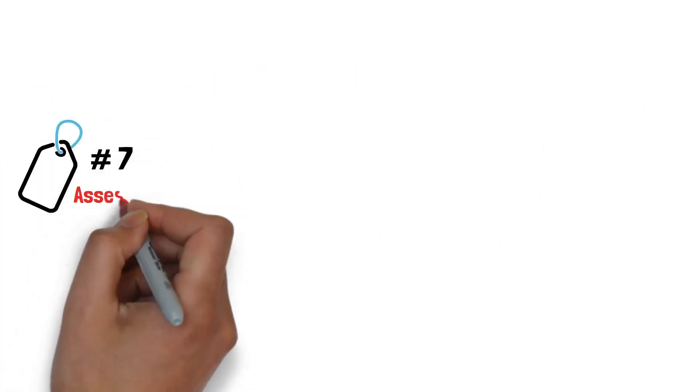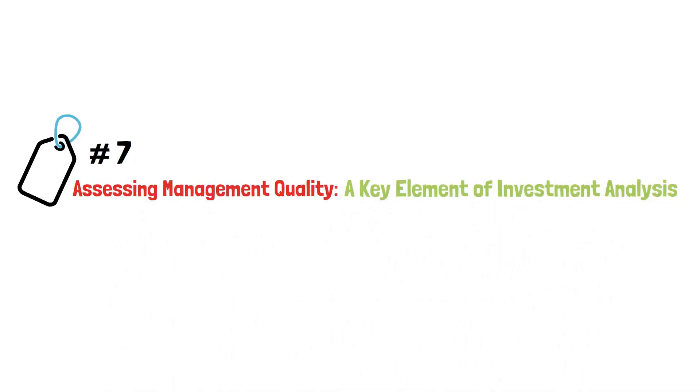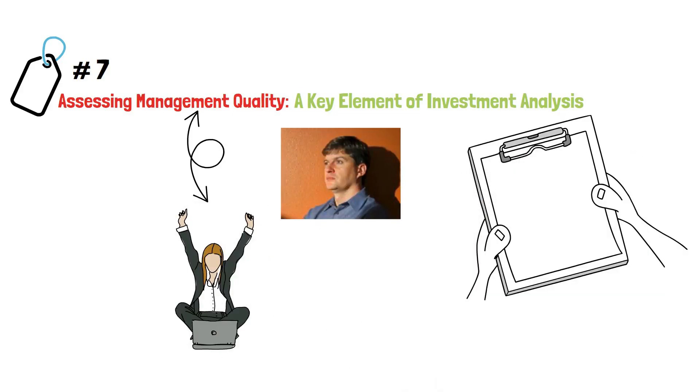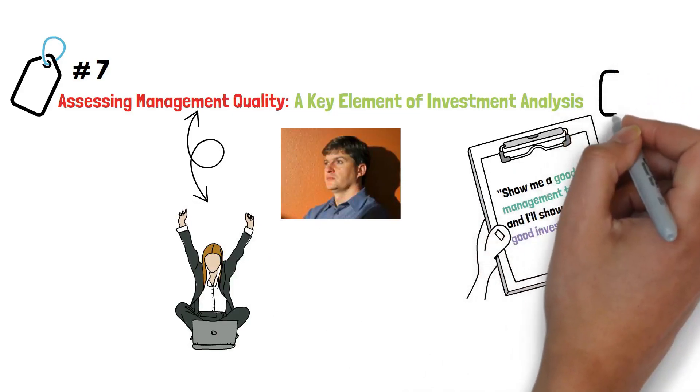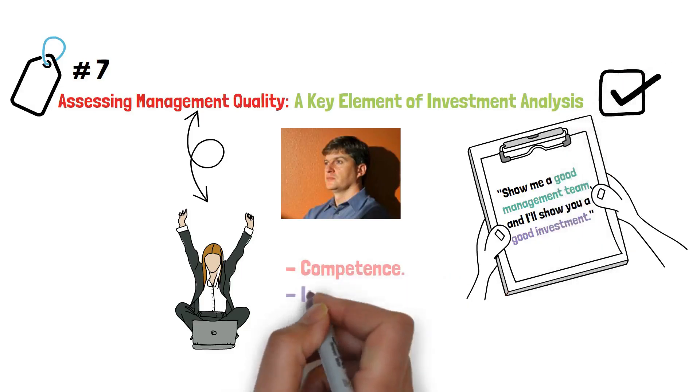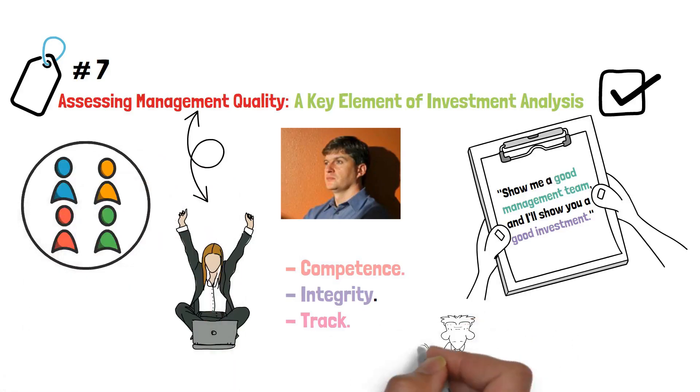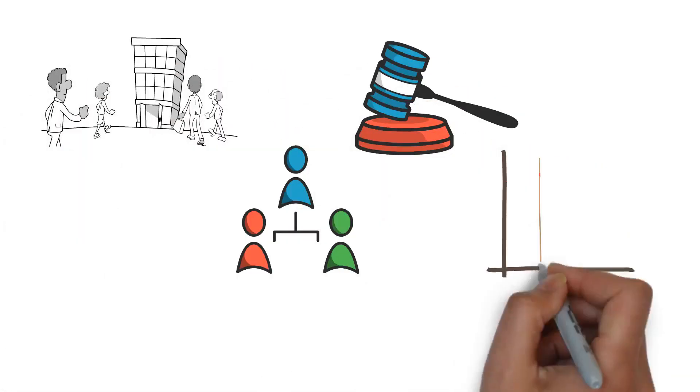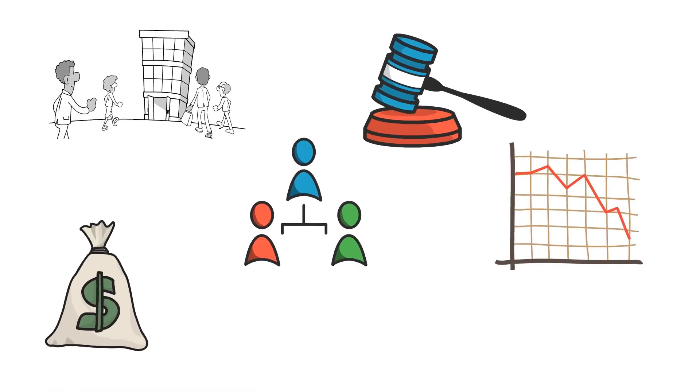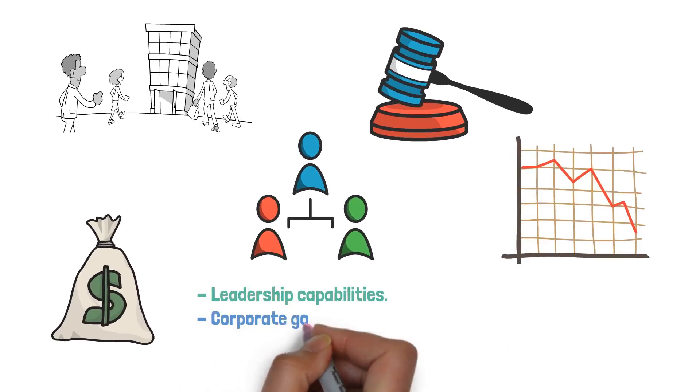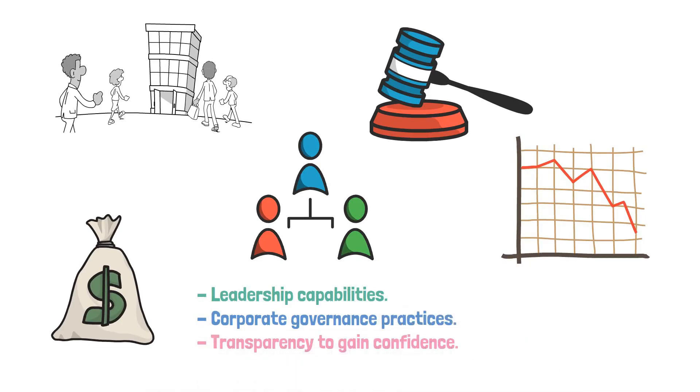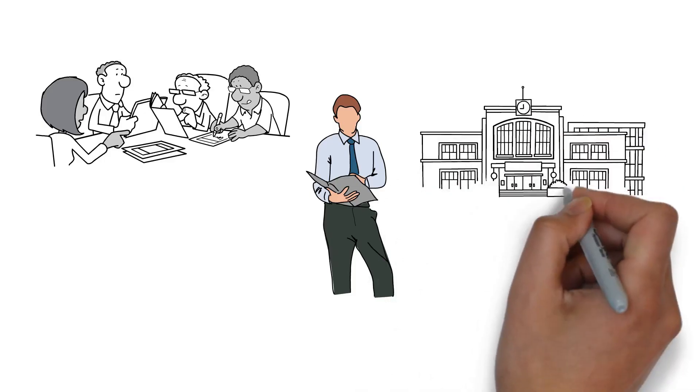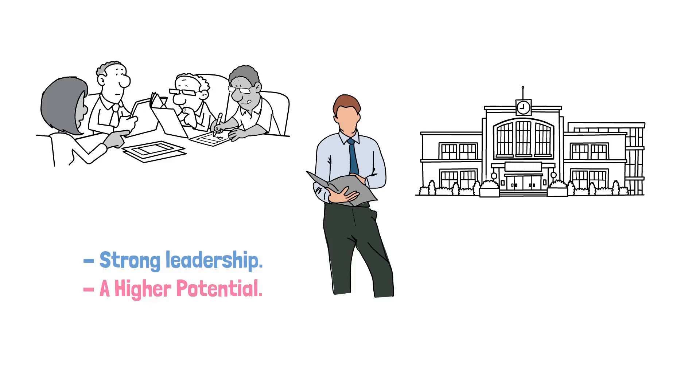Tip number 7: Assessing management quality, A key element of investment analysis. Assessing management quality is a critical aspect of investment analysis. As Michael Burry pointed out, show me a good management team, and I'll show you a good investment. This quote highlights the significance of evaluating the competence, integrity, and track record of a company's management before making investment decisions. Sound management plays a crucial role in shaping a company's performance, strategic decisions, and ability to adapt to changing market conditions. Investors should assess factors such as leadership capabilities, corporate governance practices, and transparency to gain confidence in their investment choices. By thoroughly evaluating management quality, investors can make informed decisions and increase their chances of aligning themselves with companies that have strong leadership and a higher potential for long-term success.